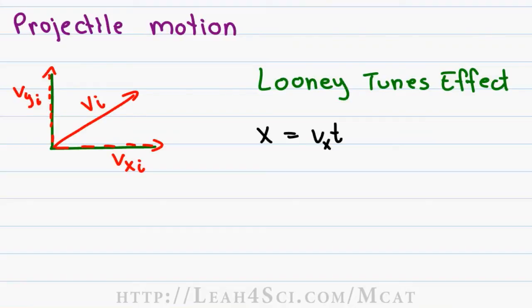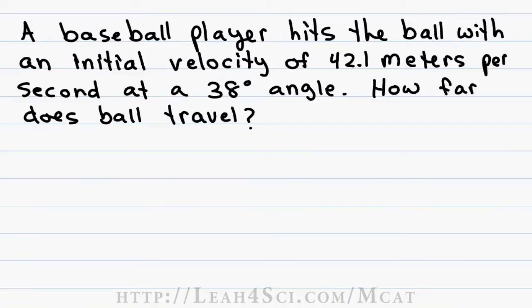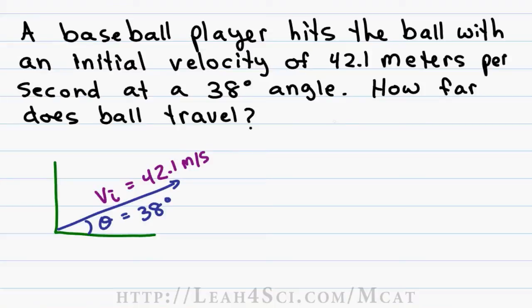Let's apply these concepts to this question. A baseball player hits the ball with an initial velocity of 42.1 meters per second at a 38 degree angle. How far does the ball travel? The first thing we want to do is get an idea of what's going on and since we have an initial angle and initial velocity given, let's draw it out. The angle theta is given as 38 degrees with an initial velocity of 42.1 meters per second. We're asked how far does the ball travel which means we're asked to solve for x.